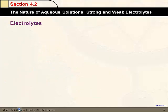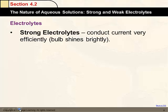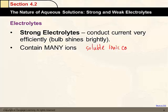Now, types of solutions that conduct a current are called electrolytes. And if you have a strong electrolyte, it means that the bulb is shining very brightly, and it contains many ions. So this is for very soluble ionic compounds. Now, some ionic compounds are not very soluble, just so you know. And this would also be for strong acids.